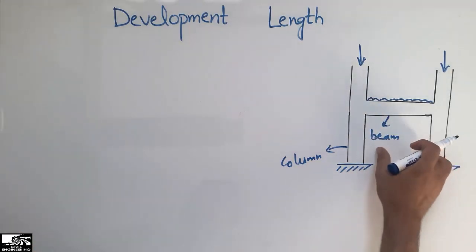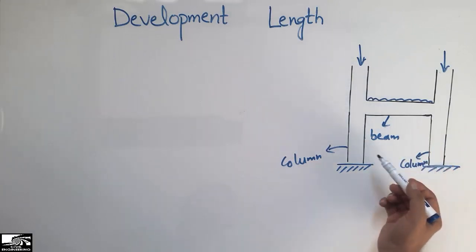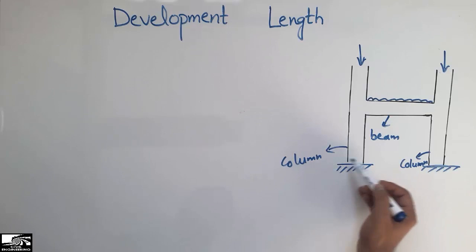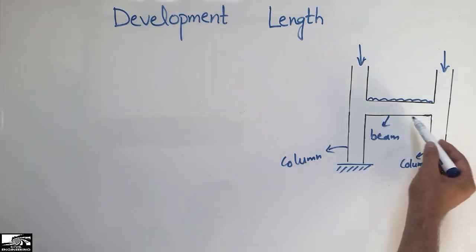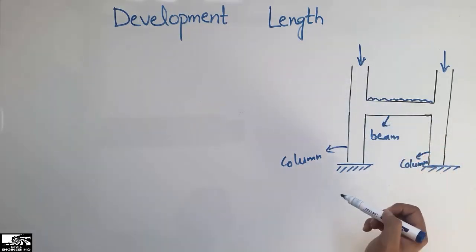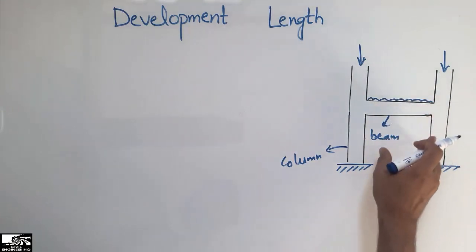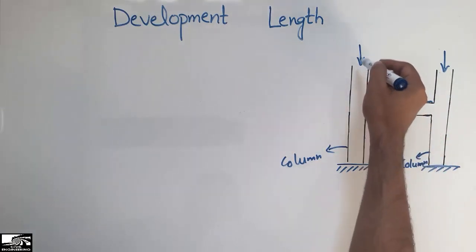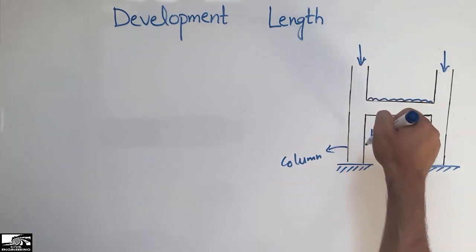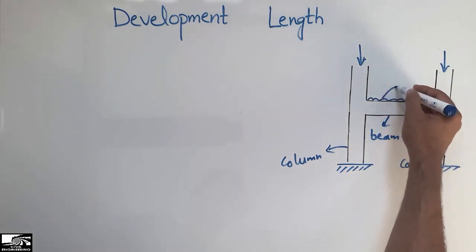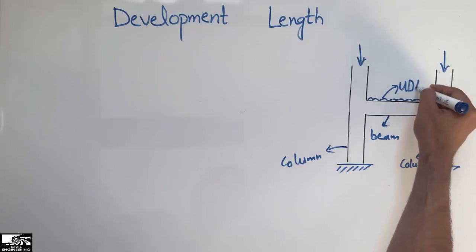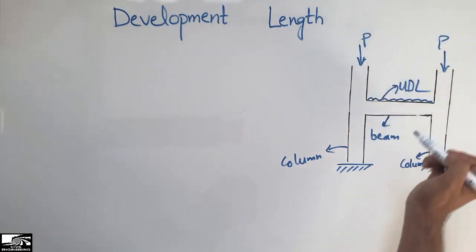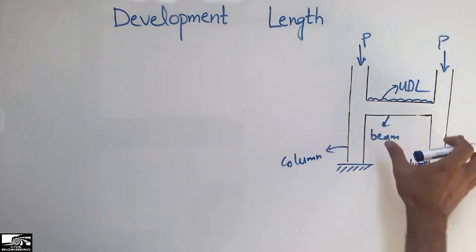Consider this frame structure, which is a combination of columns and beams. The vertical members are the columns and the horizontal member is called the beam. This frame structure is subjected to loads — vertical loads acting on the columns, a uniformly distributed load acting on the beam, and vertical loads represented by P. All these loads will be transferred to the columns.